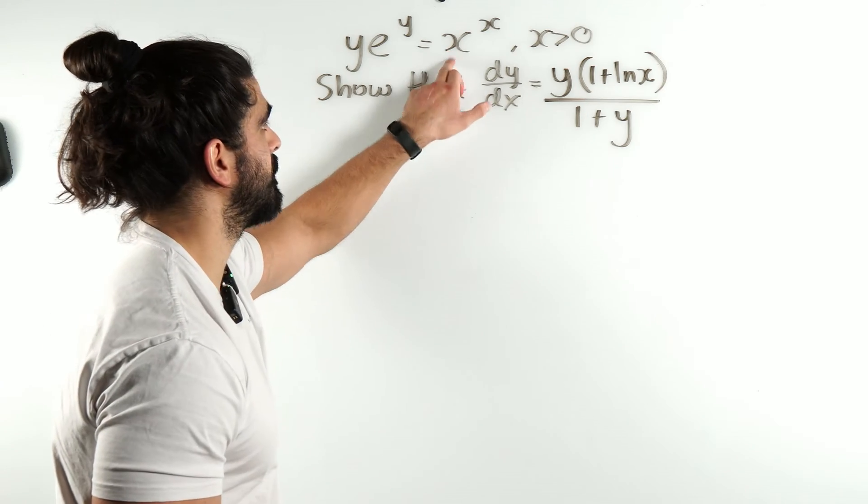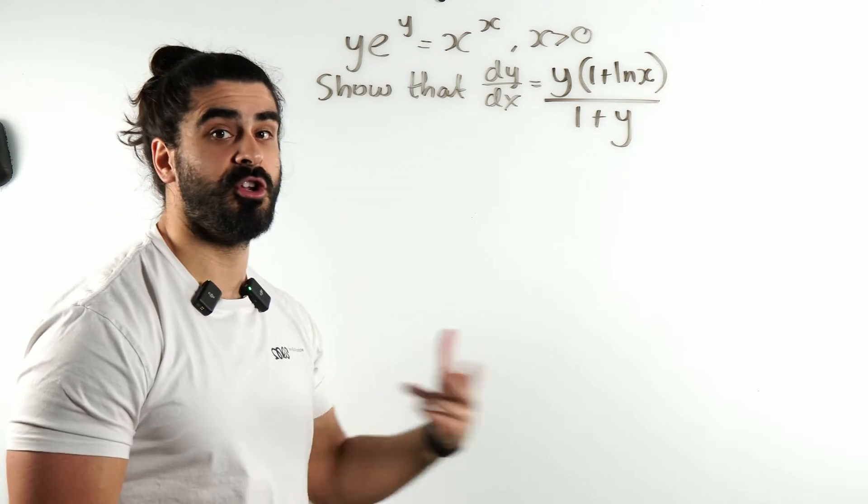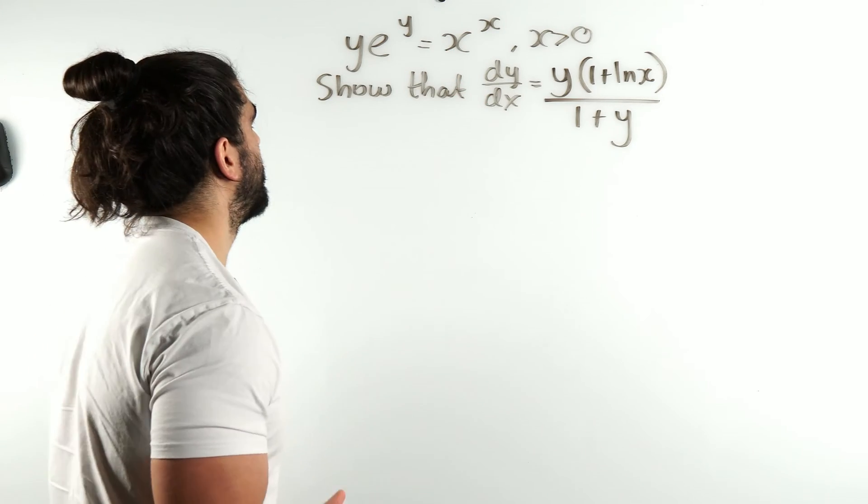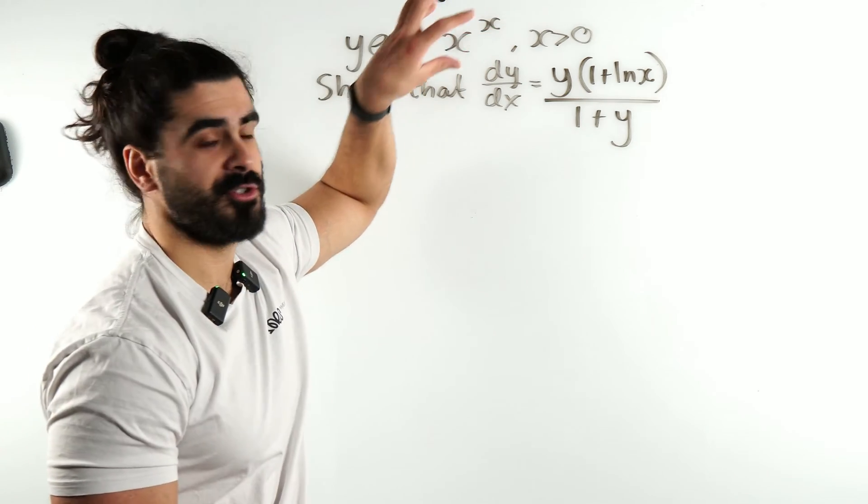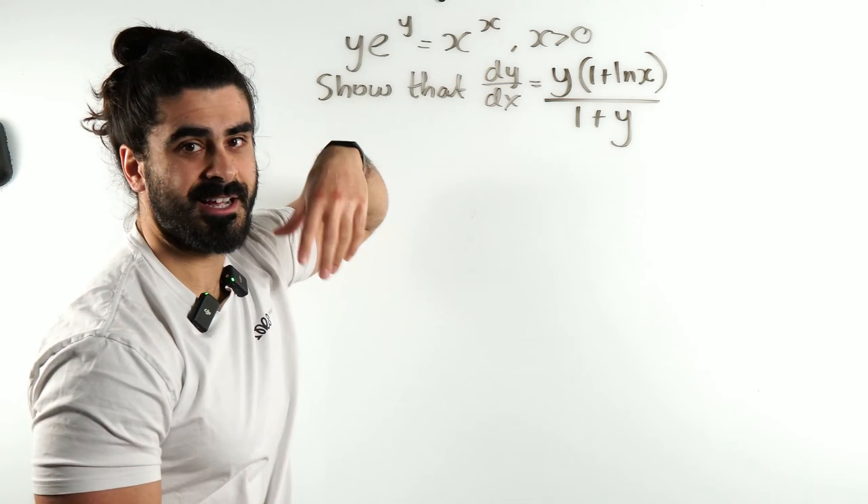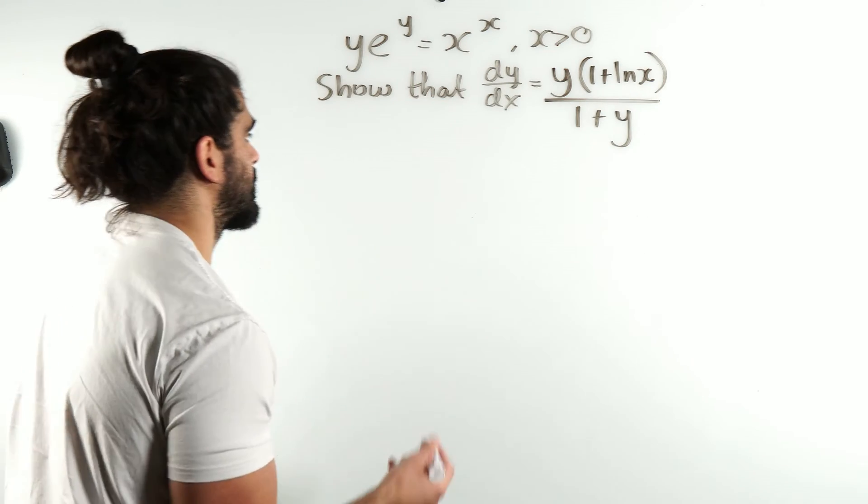Now, to differentiate something like this, it's an exponential function. We need to take ln of both sides. I was tempted to just treat this alone and differentiate, but we might as well just ln both sides anyway.